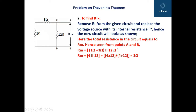The total resistance seen from points A and B equals RTH. RTH equals 1 ohm plus 3 ohm, in parallel with 12 ohm, giving 4 parallel 12 ohm. Using the parallel resistance formula: 4 times 12 divided by 4 plus 12 equals 48 divided by 16, which gives RTH equals 3 ohm.